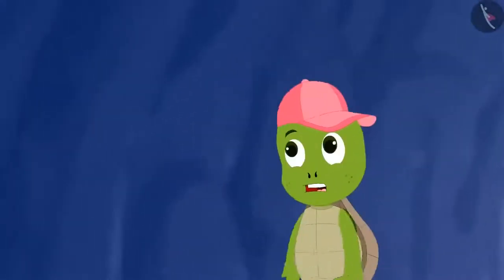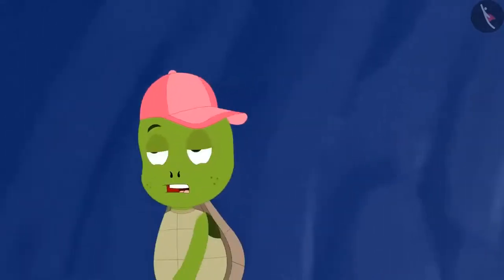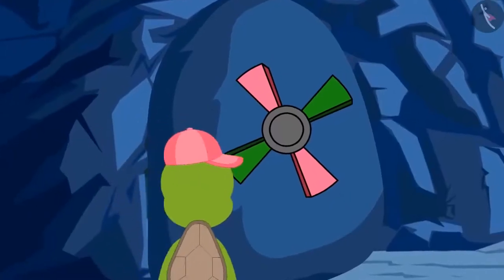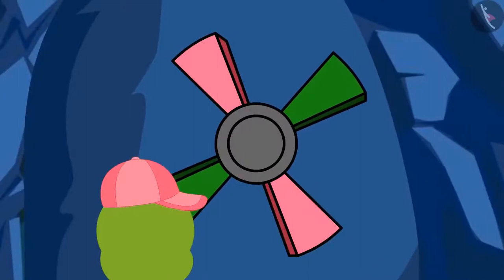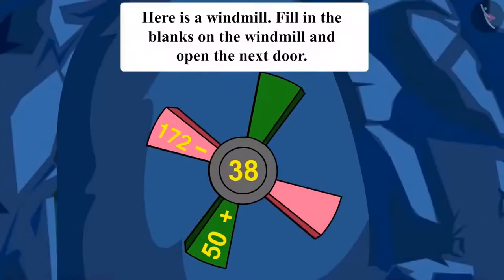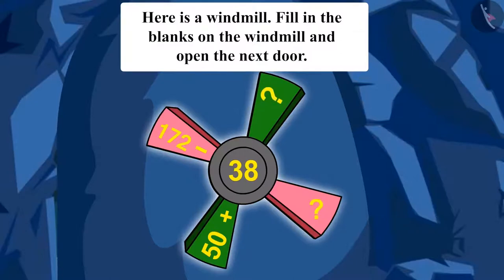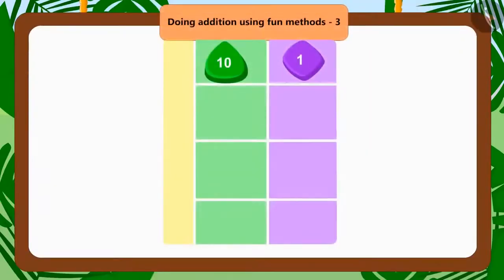Now, Tufan entered the cave and saw another door. Tufan found this puzzle at the second door. Here is a windmill. Fill in the blanks on the windmill and open the next door. Let us find the answer to this puzzle with Tufan. Children, what do we have to do here?